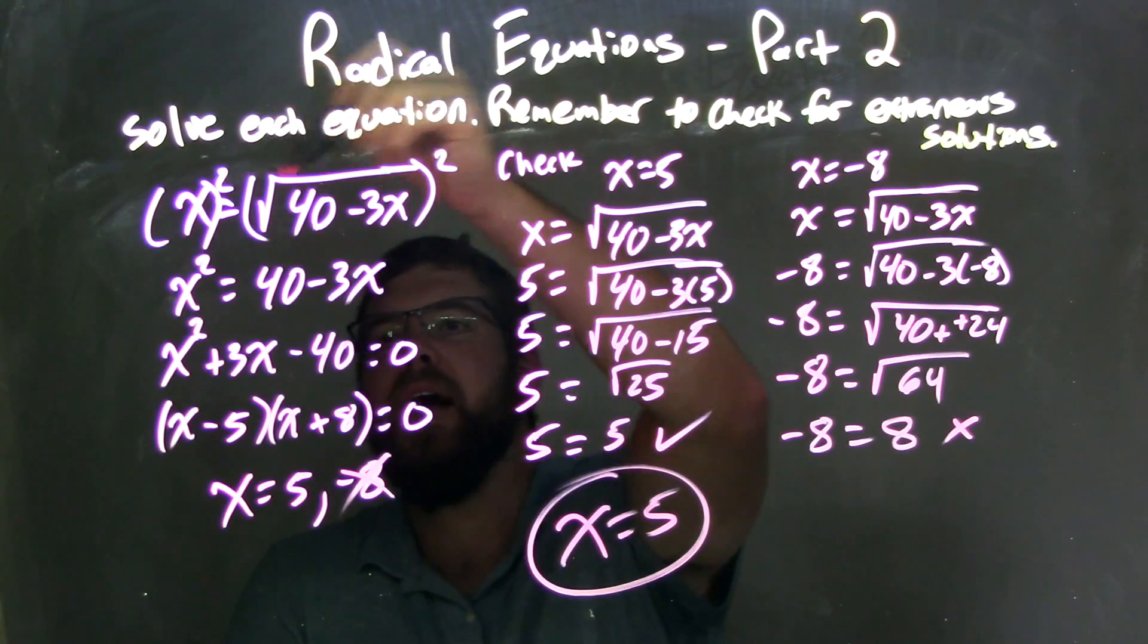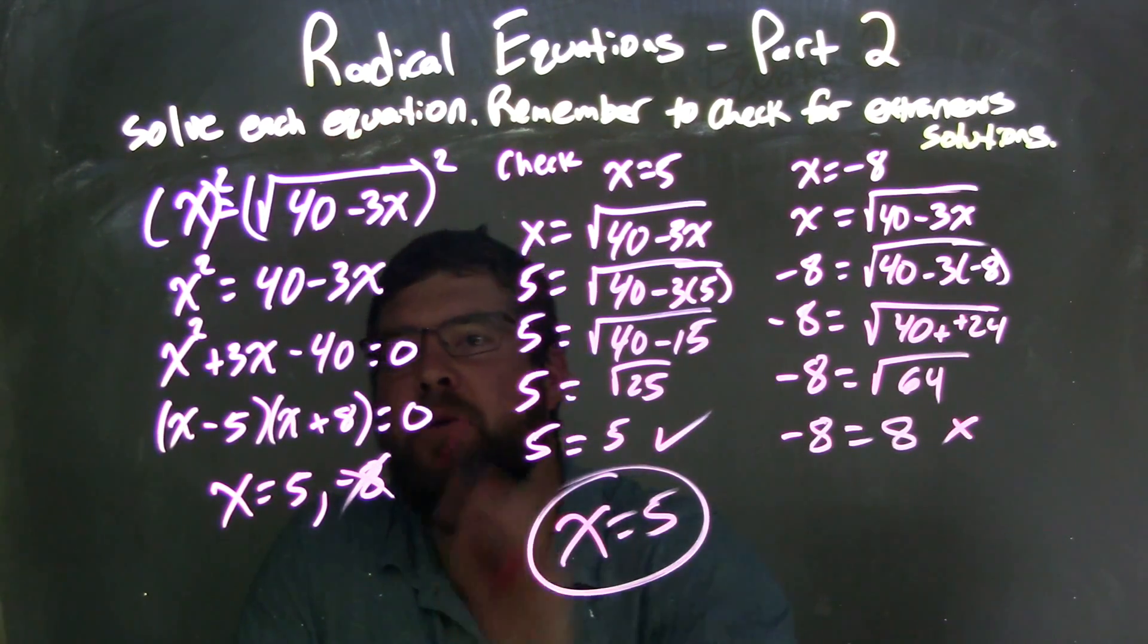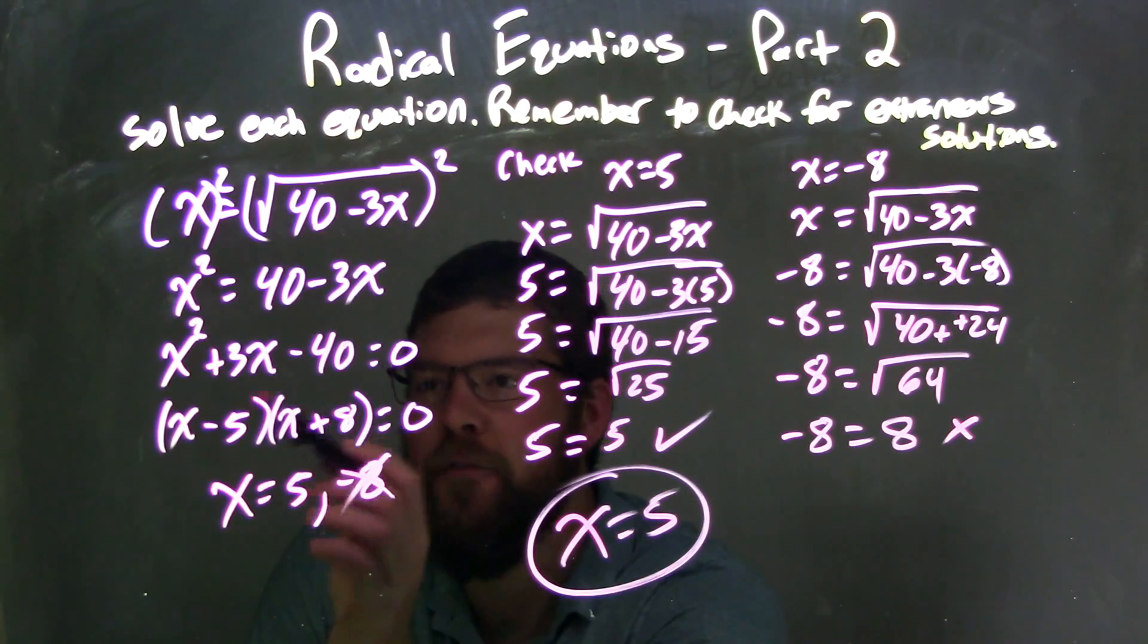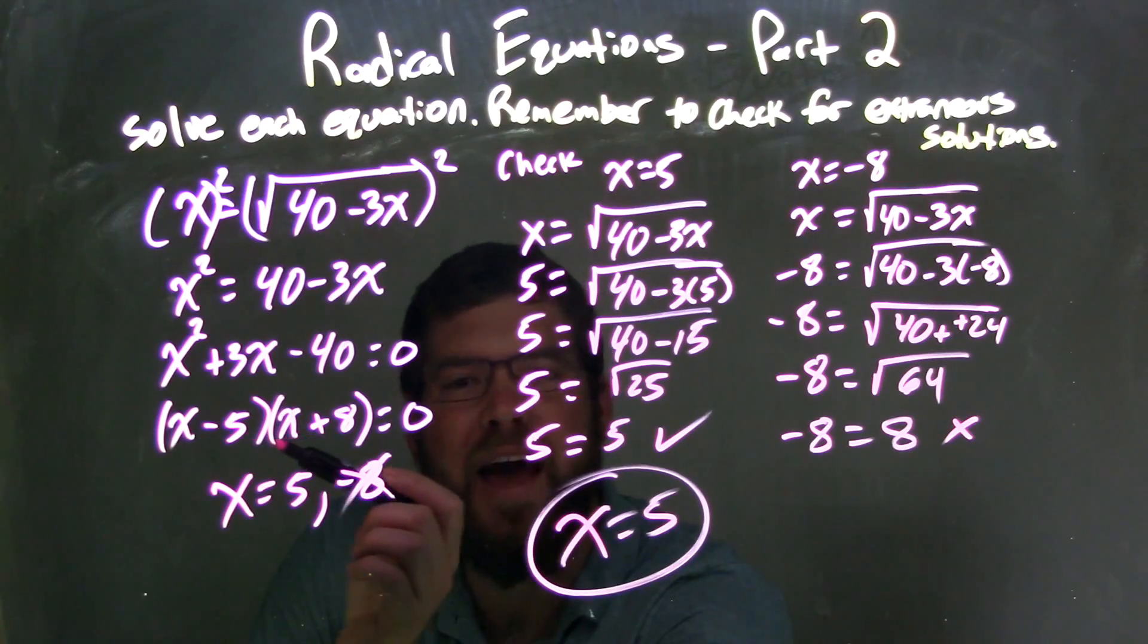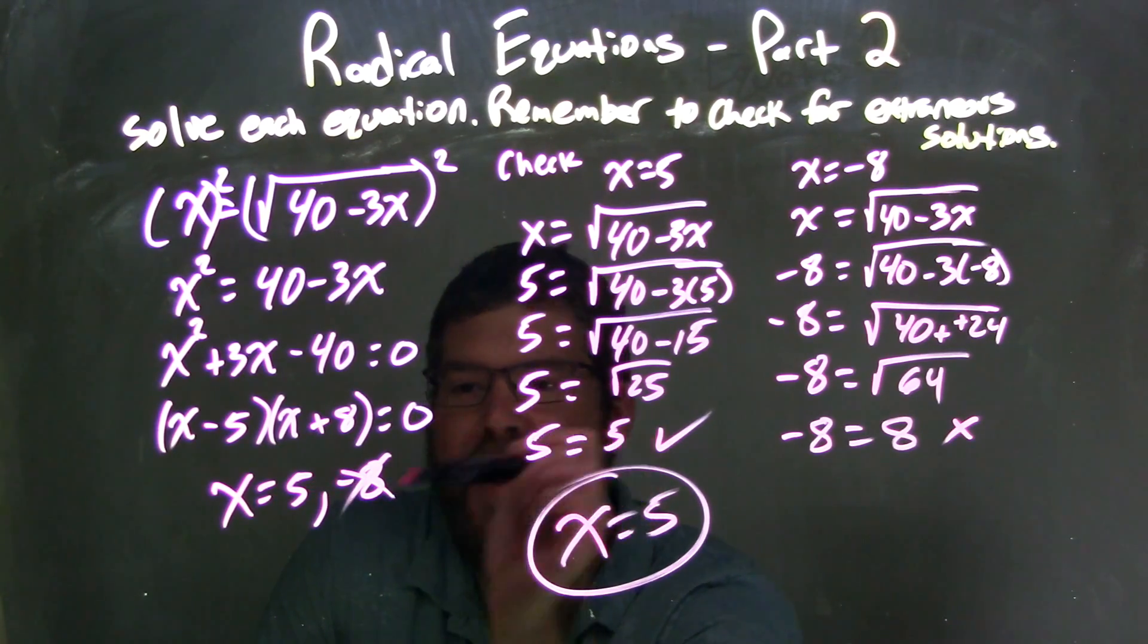Let's recap. We're given x equals square root of 40 minus 3x. I squared both sides, eliminated the radical, and brought everything over to the left-hand side by adding 3x and subtracting 40. Then I factored, getting x minus 5 times x plus 8. Setting both of those equal to 0, I got two solutions: x equals 5 and x equals negative 8.